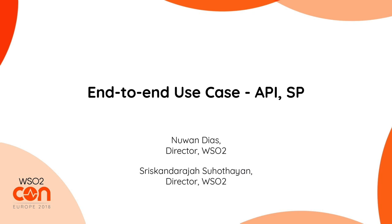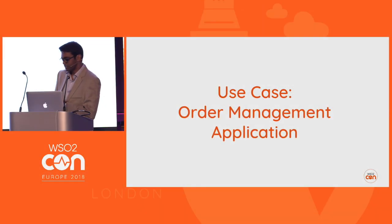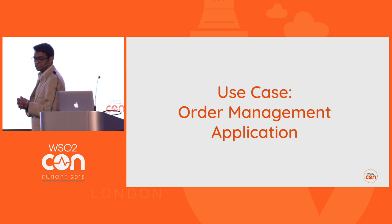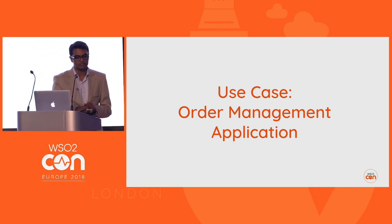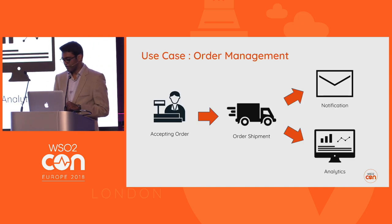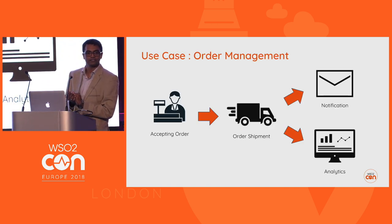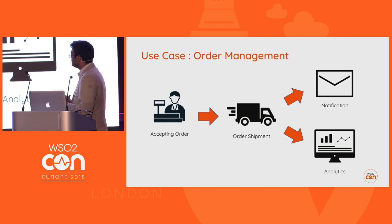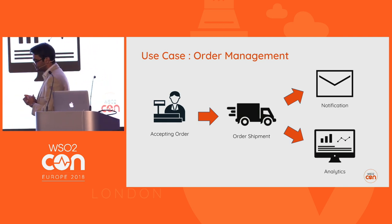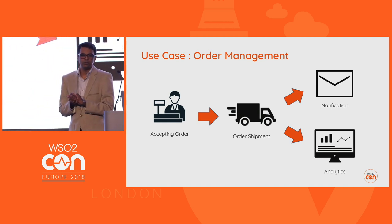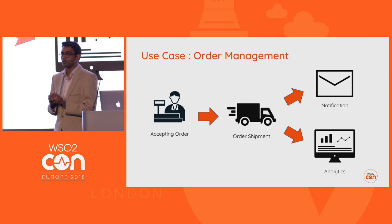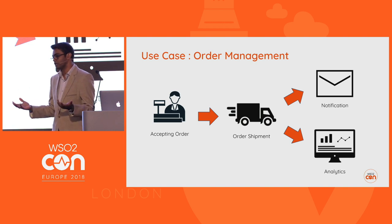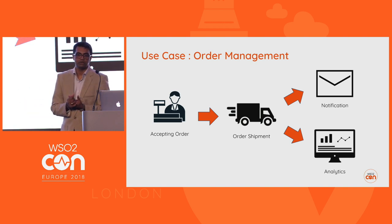Today we are going to look at a simple use case. We are trying to build an order management system. The motivation is: somebody accepts orders, the order is already accepted, and now we have to do the shipment. If there's any issue with the shipment — like if it was delayed or successful — we have to send notifications and inform people about what happened. Or if there's a delay, we have to predict when we can send that shipment.